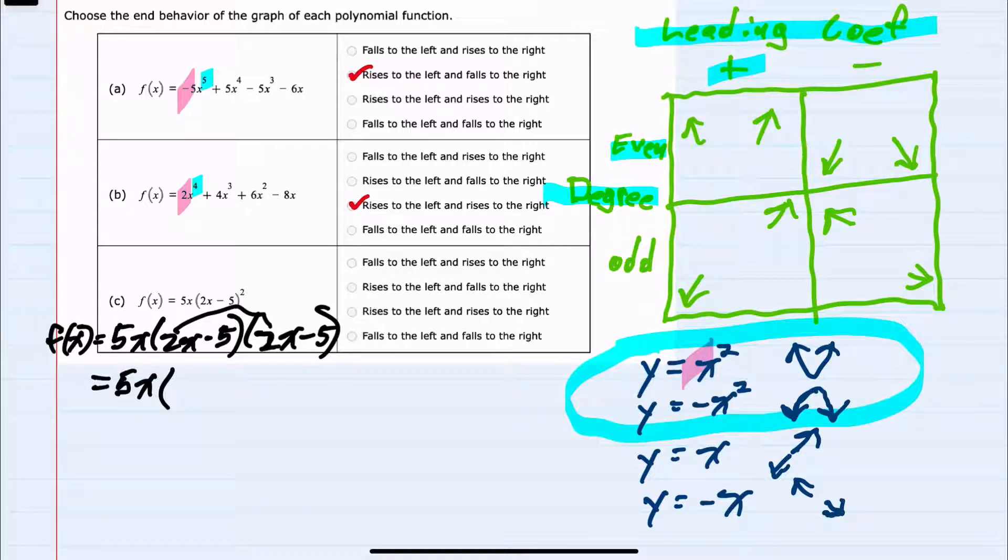Distributing, I have 2x times 2x, 4x squared, 2x times minus 5, minus 10x, minus 5 times 2x, minus 10x, minus 5 times minus 5 is a plus 25.